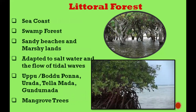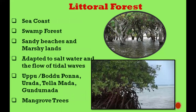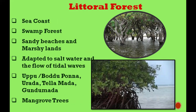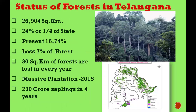Thorny forests are found in Telangana in Nalgonda, Mahbubnagar, and some parts of Medak district. The fourth type is littoral forest, also called swamp forest, found near the sea coast — near sandy beaches and marshy lands. The trees grow in water, adapting to saltwater and tidal waves. These are called mangrove forests. India, being a peninsula with a long coastline, has significant mangrove forest.